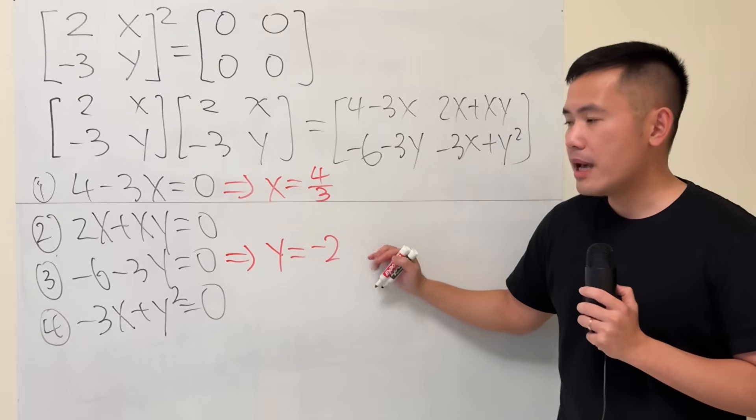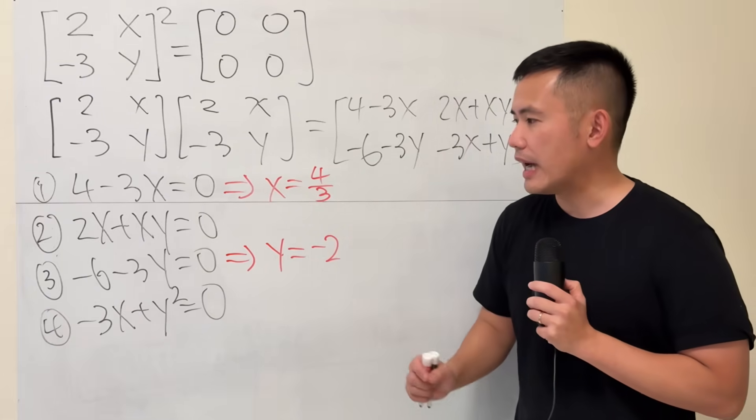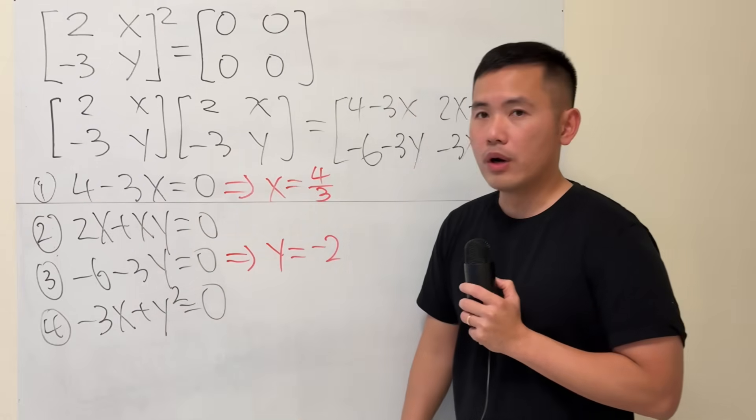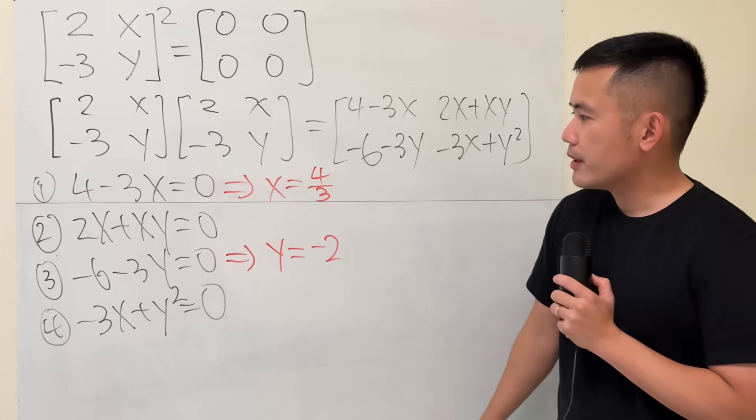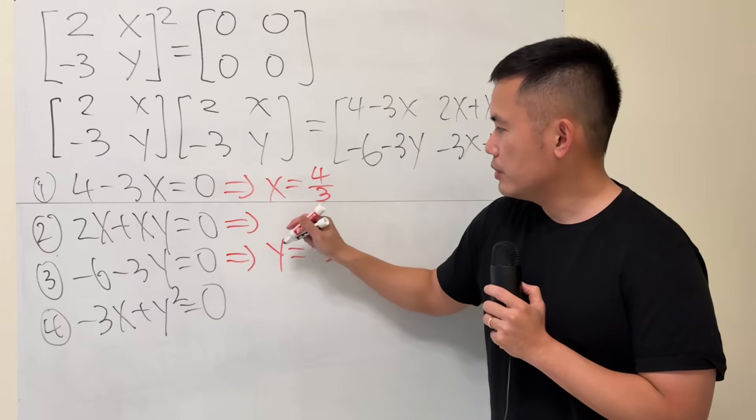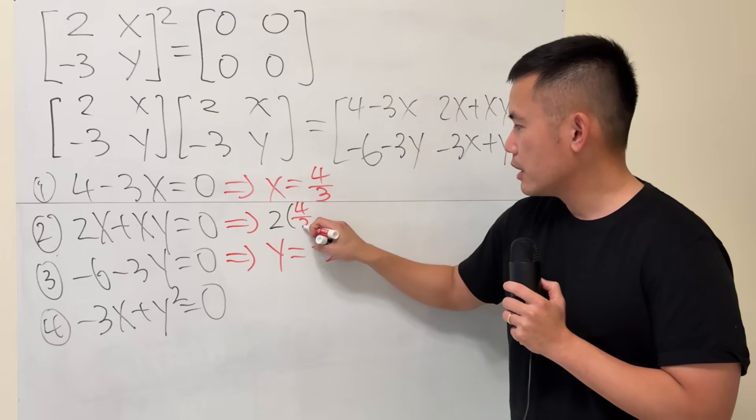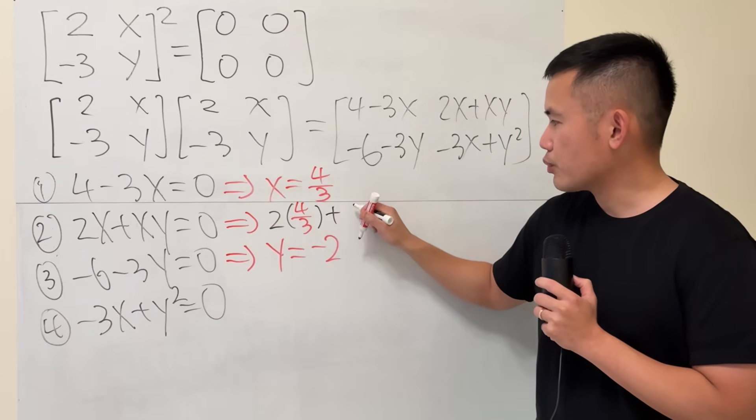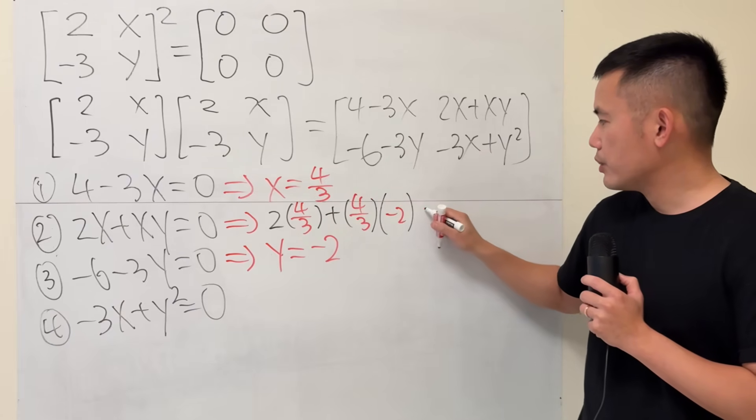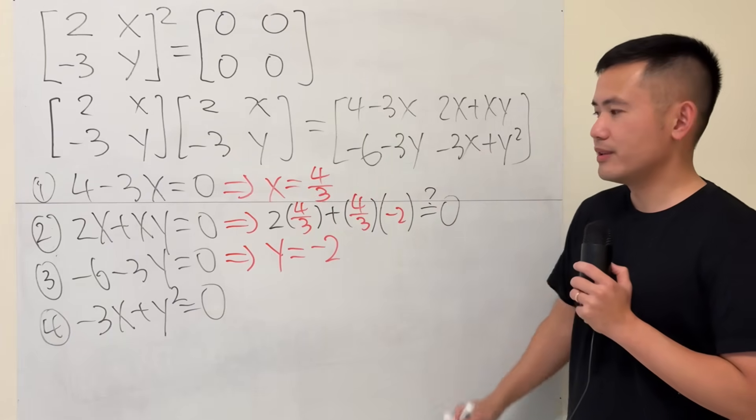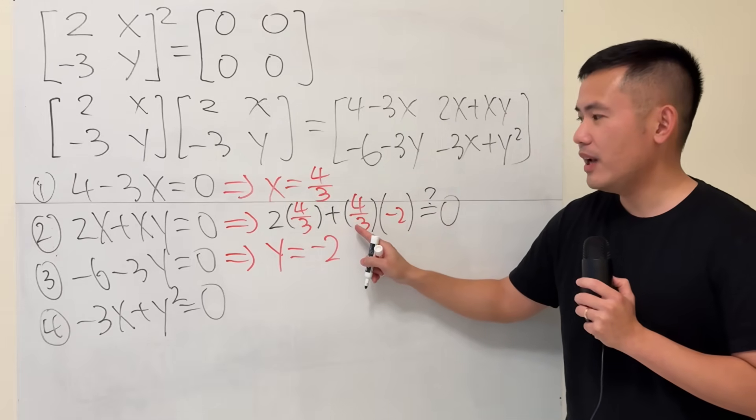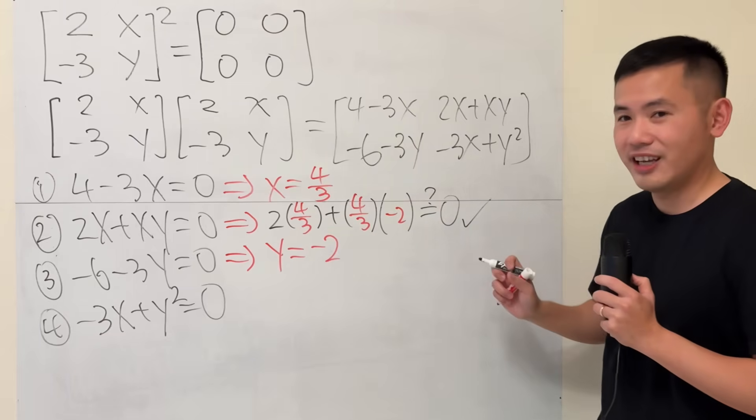All right. So, we got the x and y. But we also have to make sure that these two values satisfy equation 2 and equation 4. So, I'm just going to be plugging them in a check. So, have a look. This right here will give us 2 times 4 over 3, and then plus x times y, which is 4 over 3 times negative 2. Do we get 0? Let's have a look. This is 8 over 3. This is negative 8 over 3. Together, of course, we get 0. So, it checks.